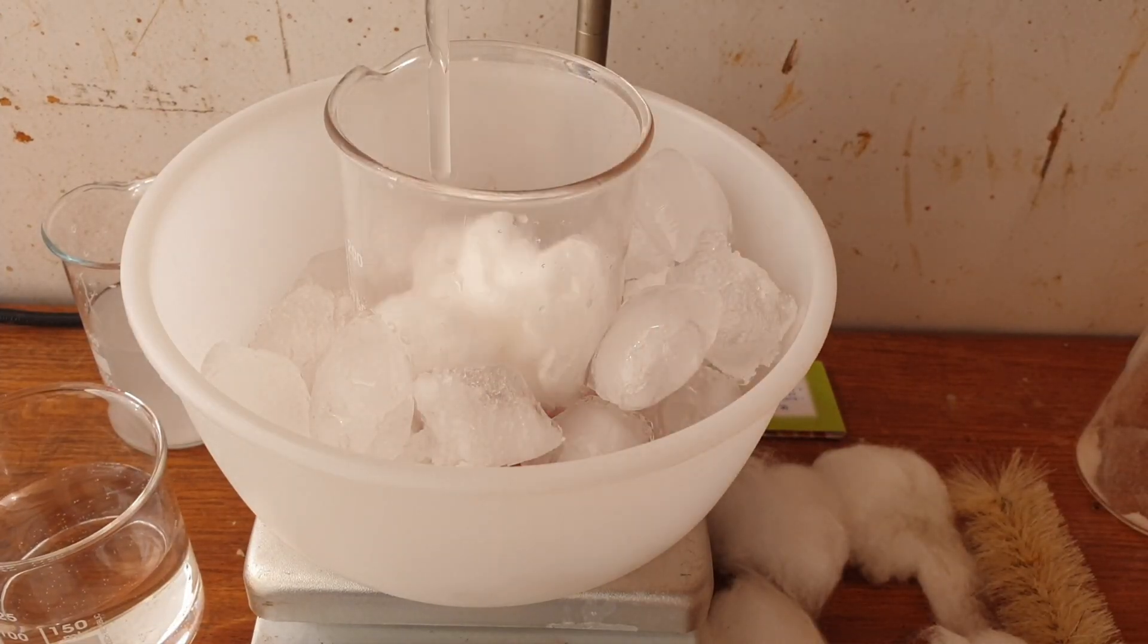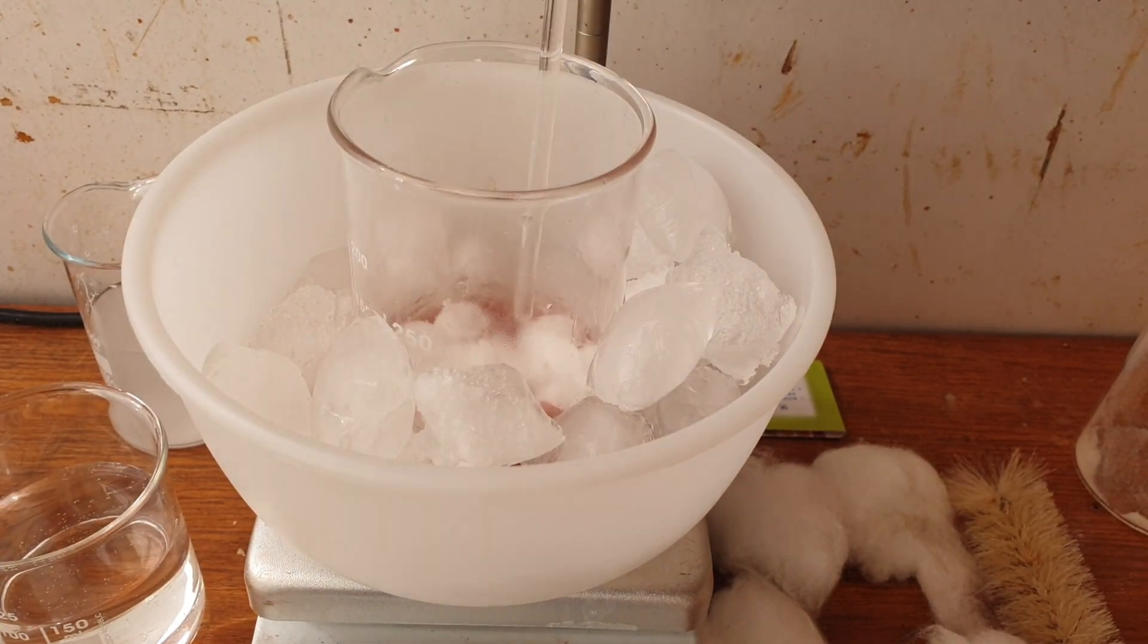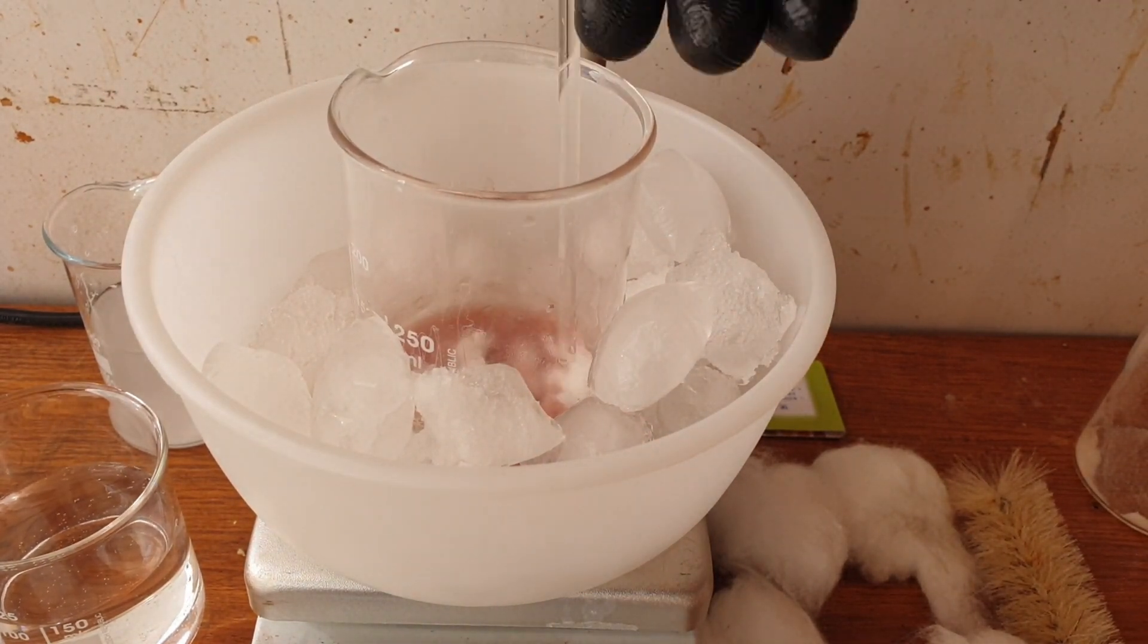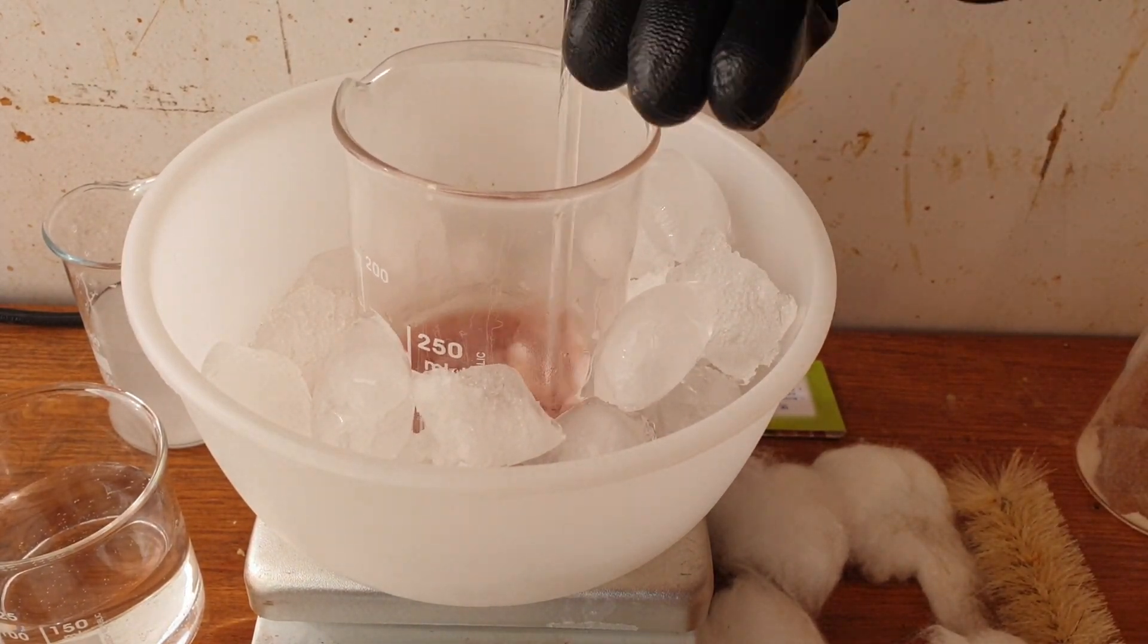And now for the fun part. We're adding the cellulose to the nitration mixture. I'm using a glass stirrer to push it down, but you can also use some stainless steel if you'd like.